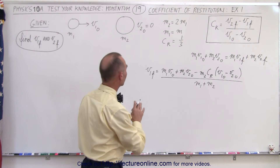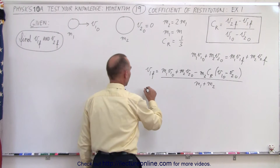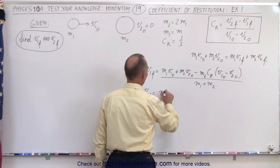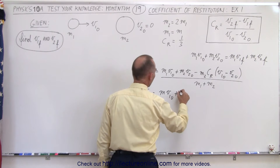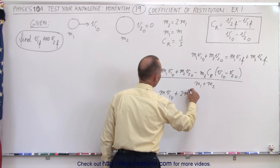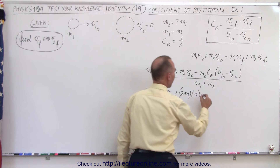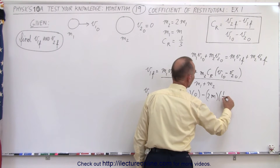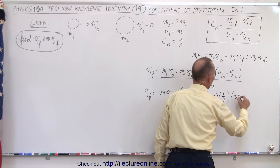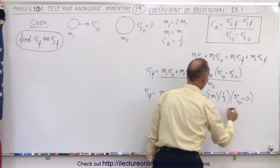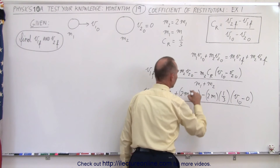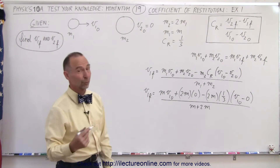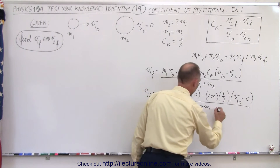So now let's plug in the numbers that we have. v1 final is equal to m1, which is m, times v1 initial, plus m2, which is 2m, times v2 initial which is 0, minus m2 which is 2m, times the coefficient of restitution, times v1 initial minus 0, all divided by the sum of the two masses, which is m plus 2m.